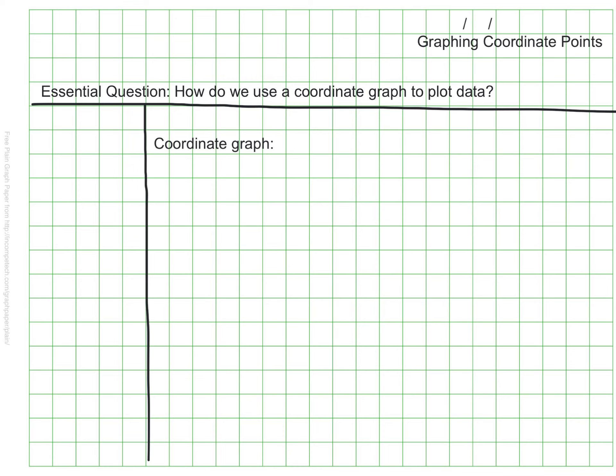The first term is coordinate graph itself. A coordinate graph is a plane that consists of two perpendicular number lines that we call axes. That means that there is a horizontal number line that goes one way and a vertical number line that connects and goes the other way.